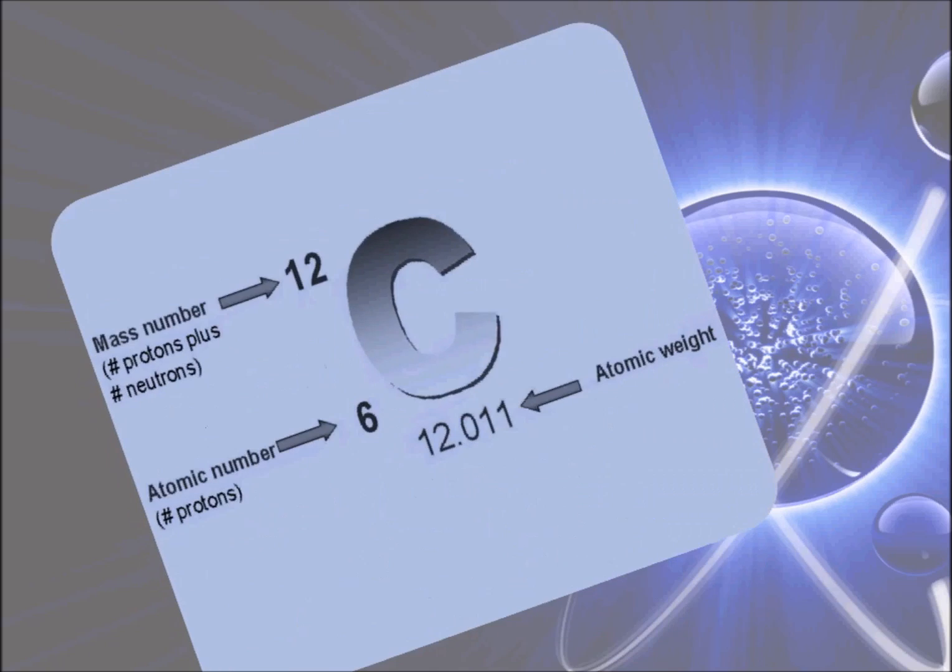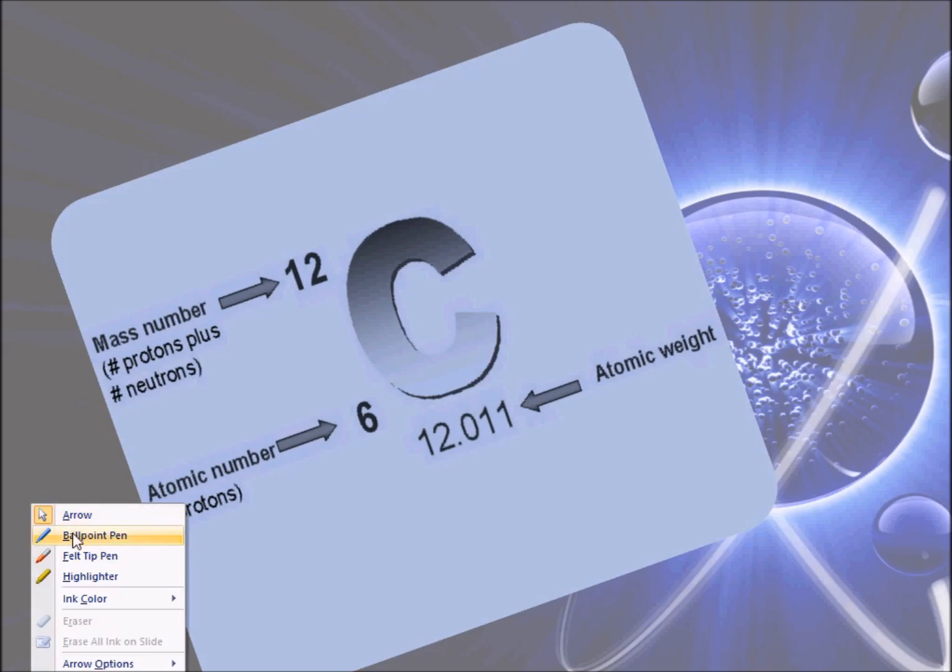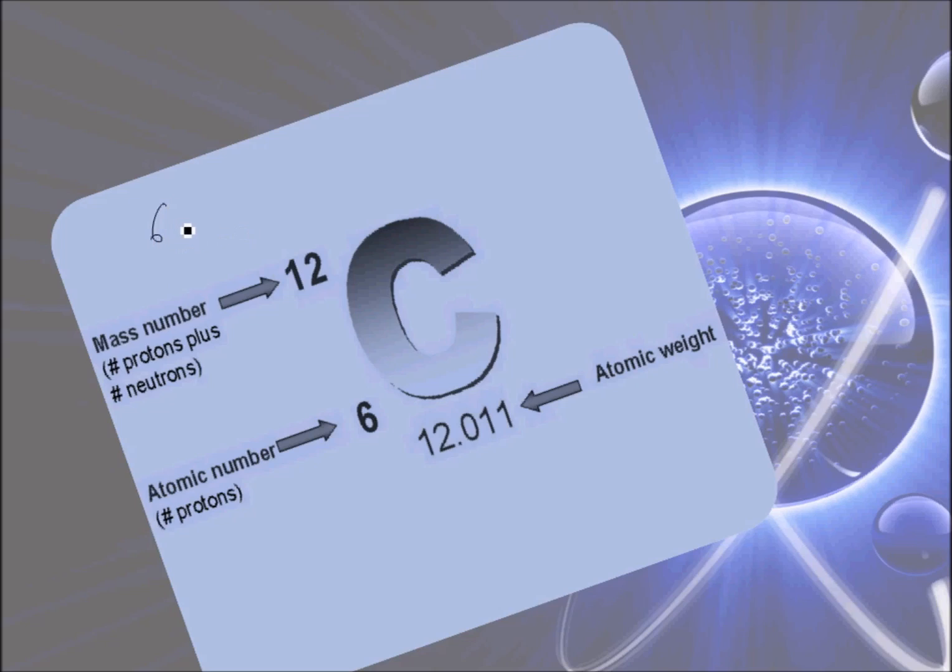For example, I have taken here carbon C with mass number 12 and atomic number 6. Let's take a marker and understand it in a proper manner. We know that every element has the same number of protons and electrons, so here in carbon there are 6 protons and 6 electrons.